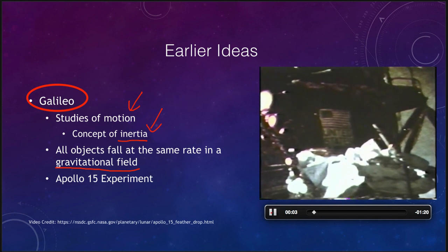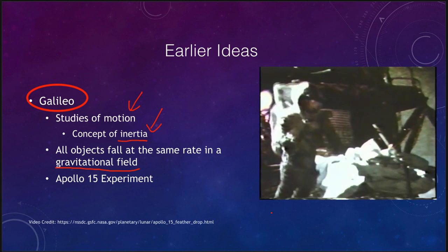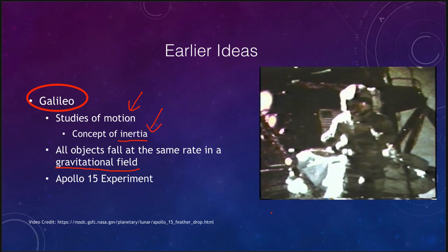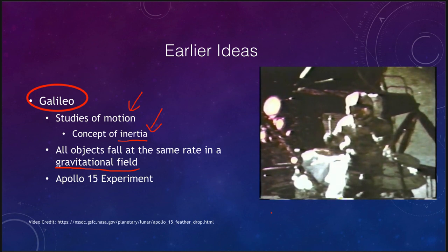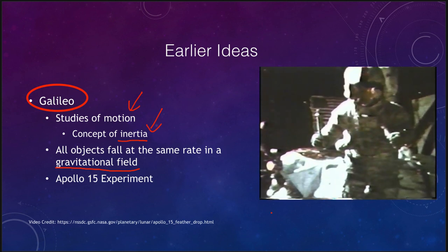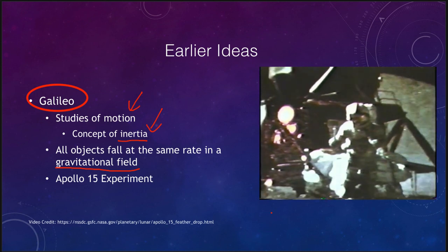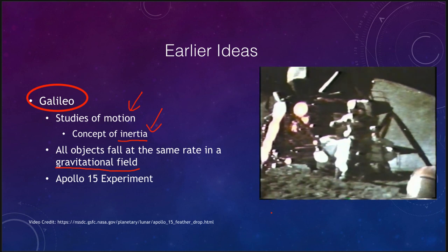Apollo 15 astronaut: 'In my left hand I have a feather, in my right hand a hammer. One of the reasons we got here today was because of a gentleman named Galileo, who made a rather significant discovery about falling objects in gravity fields, and we thought where better to confirm his findings than on the moon. The feather happens to be a falcon feather. I'll drop the two of them here and hopefully they'll hit the ground at the same time.' — And they do.